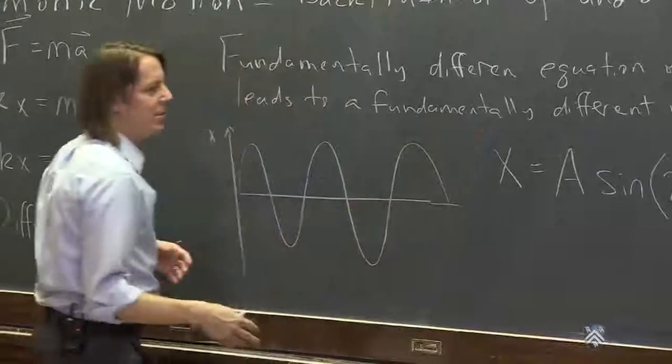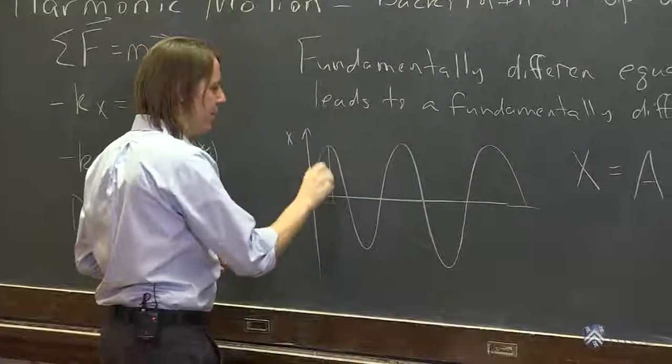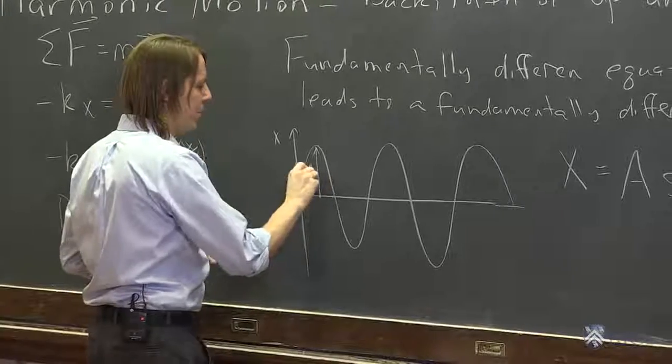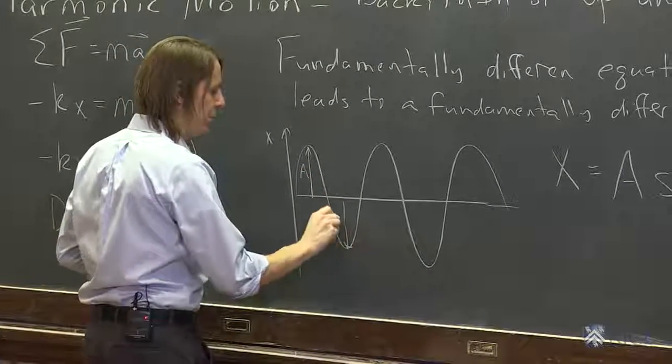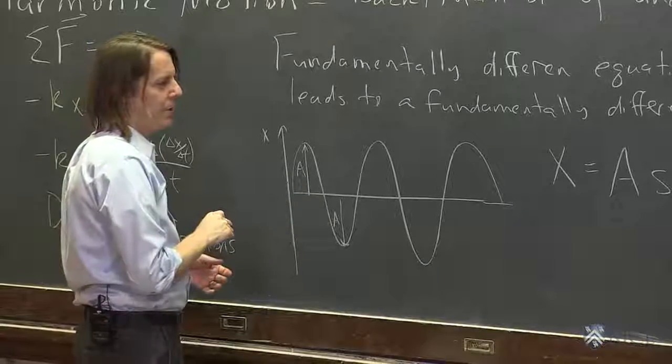The thing showing up in here—one is the amplitude. That's how high it gets above zero and how low it gets below zero. That's the amplitude, how far it goes from the zero line.